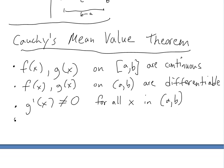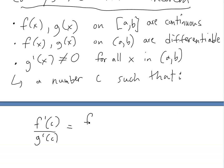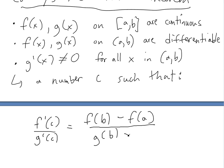Cauchy's mean value theorem states that there exists a number c such that f'(c) divided by g'(c) equals f(b) minus f(a), all divided by g(b) minus g(a). This is the generalized mean value theorem.